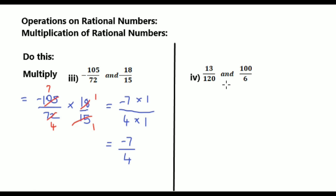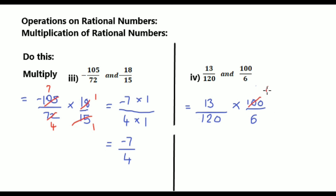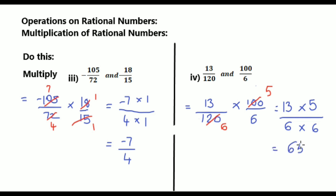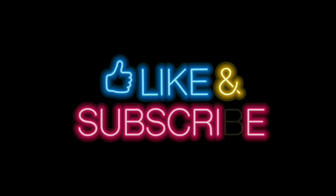See now fourth sum: multiply 13/120 and 100/6. Write down that equals to 13/120 into 100/6. Now we shall do cancellation: 4 twenty-fives are 100, 4 twenty-sixes are 120. That equals to multiply numerators 13 into 5 by multiply denominators 6 into 6. That equals to 13 fives are 65 by 6 sixes are 36. So the answer is 65/36. Hope you all like this video.